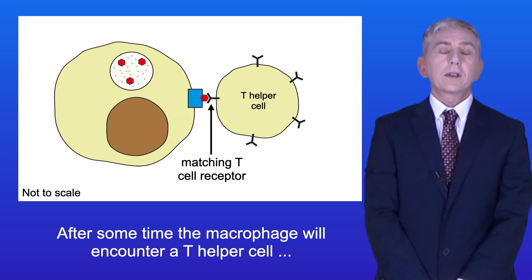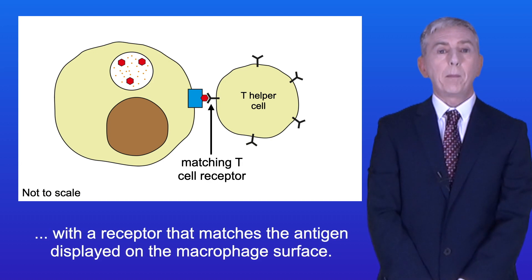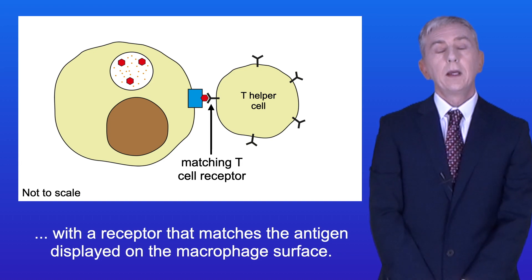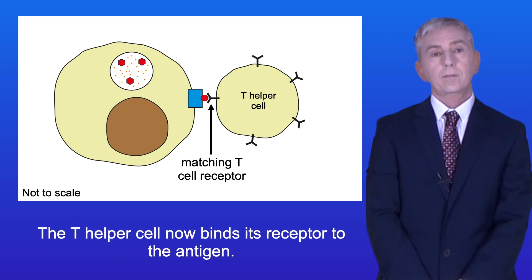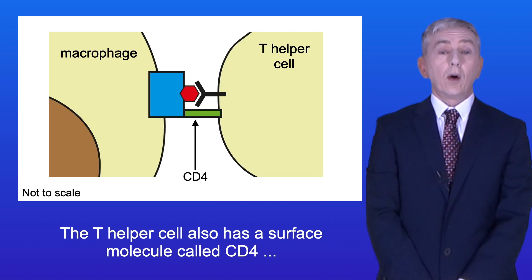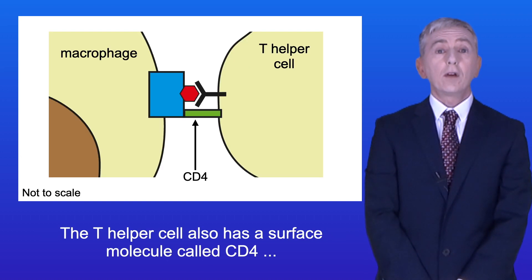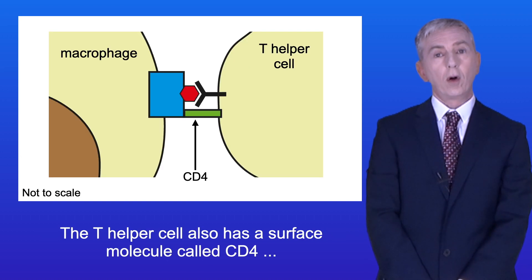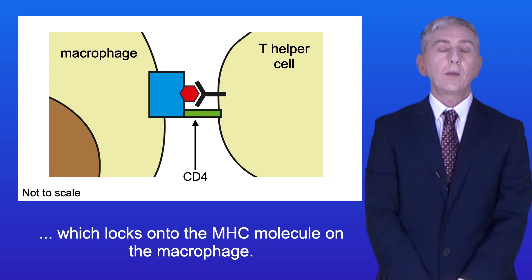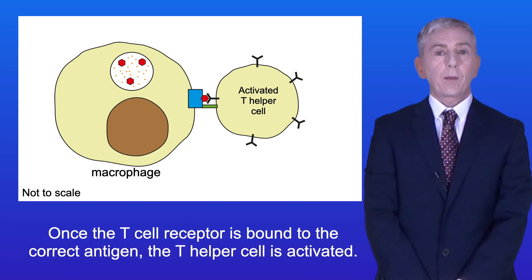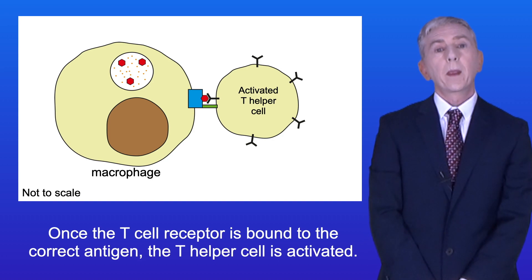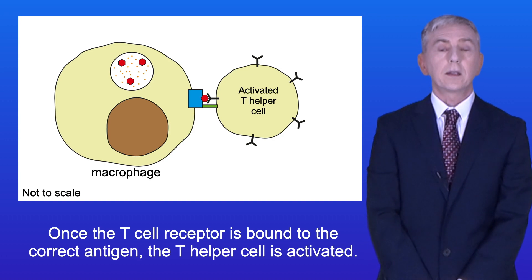After some time the macrophage will encounter a T helper cell with a receptor that matches the antigen displayed on the macrophage surface. The T helper cell now binds its receptor to the antigen. The T helper cell also has a surface molecule called CD4 which locks onto the MHC molecule on the macrophage. Once the T cell receptor is bound to the correct antigen, the T helper cell is activated.